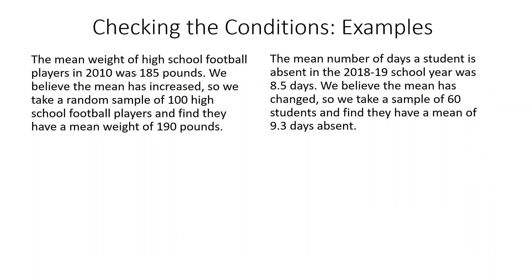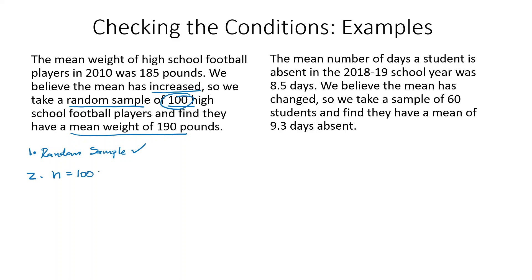Let's check conditions for both examples. For the mean weight of high school football players: we took a random sample of 100 high school football players with a mean weight of 190 pounds. We already did our parameter and stated our hypothesis. First, random sample — check, it says random sample right there. Next, for normal: our sample size is 100, which is definitely greater than or equal to 30, so the Central Limit Theorem gives us a normal sampling distribution.